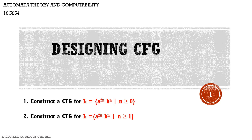Hello students. In this video I will explain how to construct context-free grammars for two languages: L equal to a to the power 2n b to the power n where n is greater than or equal to 0, and L equal to a to the power 2n b to the power n where n is greater than or equal to 1. The only difference between these two languages is the minimum string of each language.